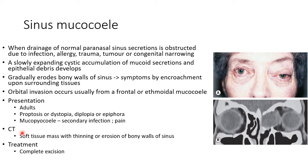Coming to the investigation, we can do a CT scan. CT scan will show a soft tissue mass with thinning or erosion of the bony walls of the sinus, as you can see in this picture. The treatment of sinus mucocele is by complete excision.